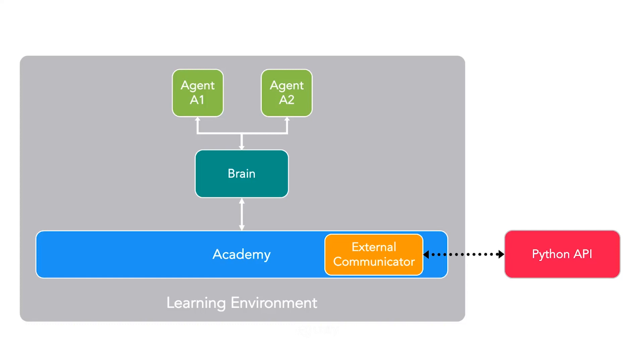What you can see here is a relatively simple diagram where we have two agents being controlled by a single brain.